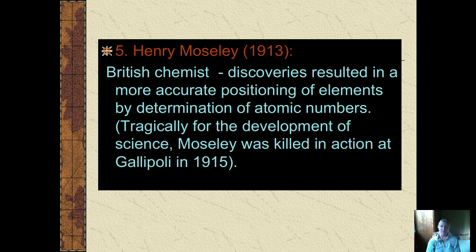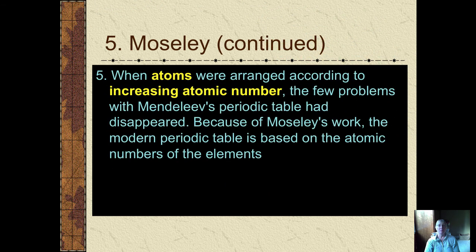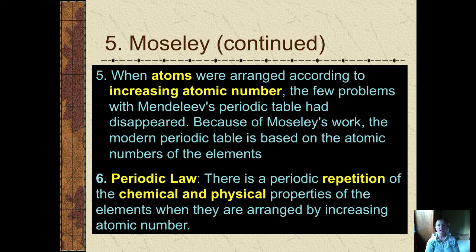Sadly, the British government thought it appropriate to take someone of his great intellect and send him to war in World War I, so unfortunately he was killed in action in 1915. Moseley said that when atoms are arranged according to increasing atomic number, the remaining problems that existed in Mendeleev's periodic table disappeared. Because of Moseley's work, our modern periodic table is based on the atomic numbers of the elements — hence we have the correct version of the periodic law: there is a periodic repetition of the chemical and physical properties of the elements when arranged in order of increasing atomic number.